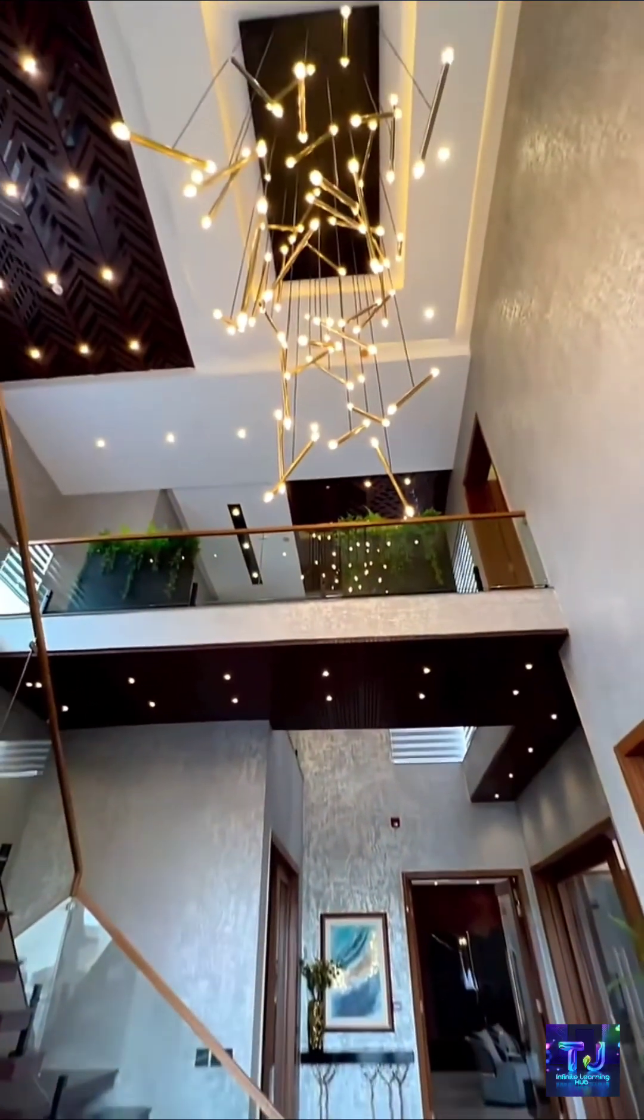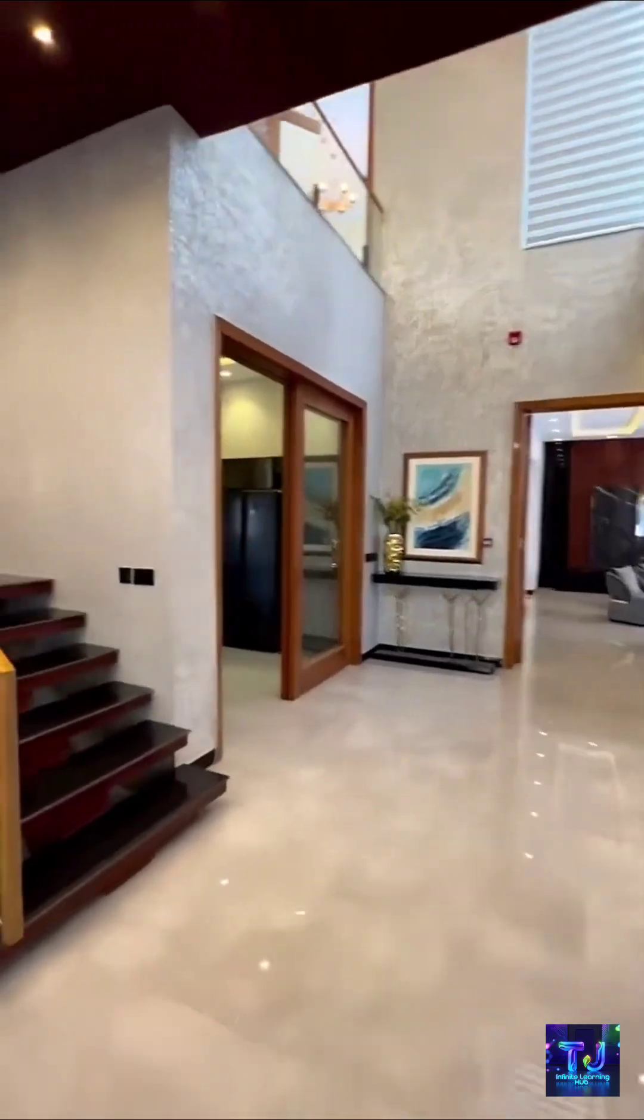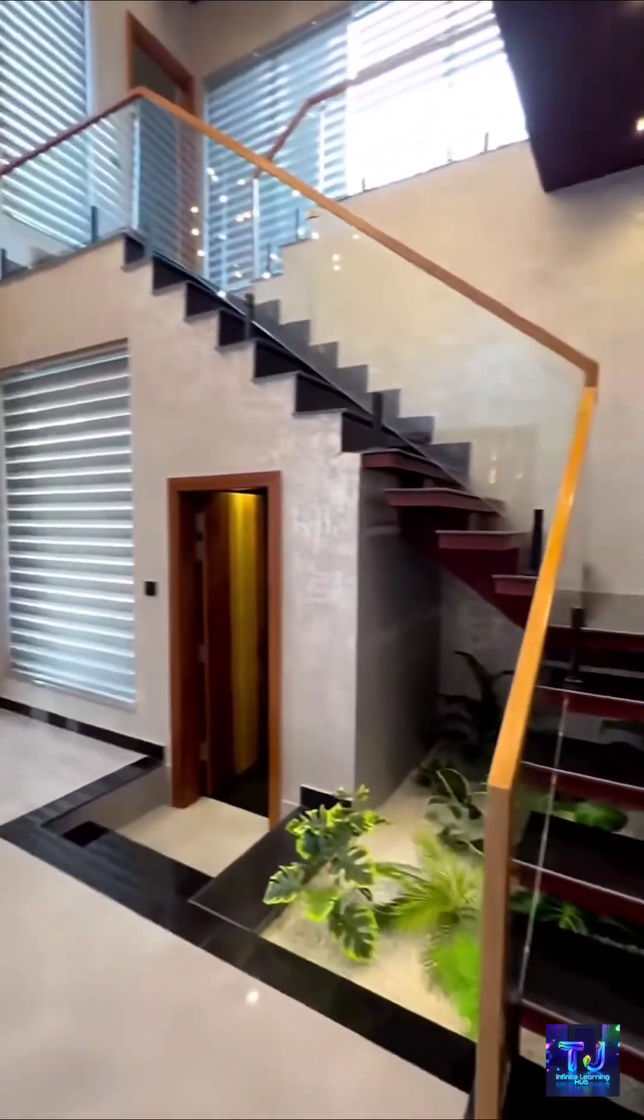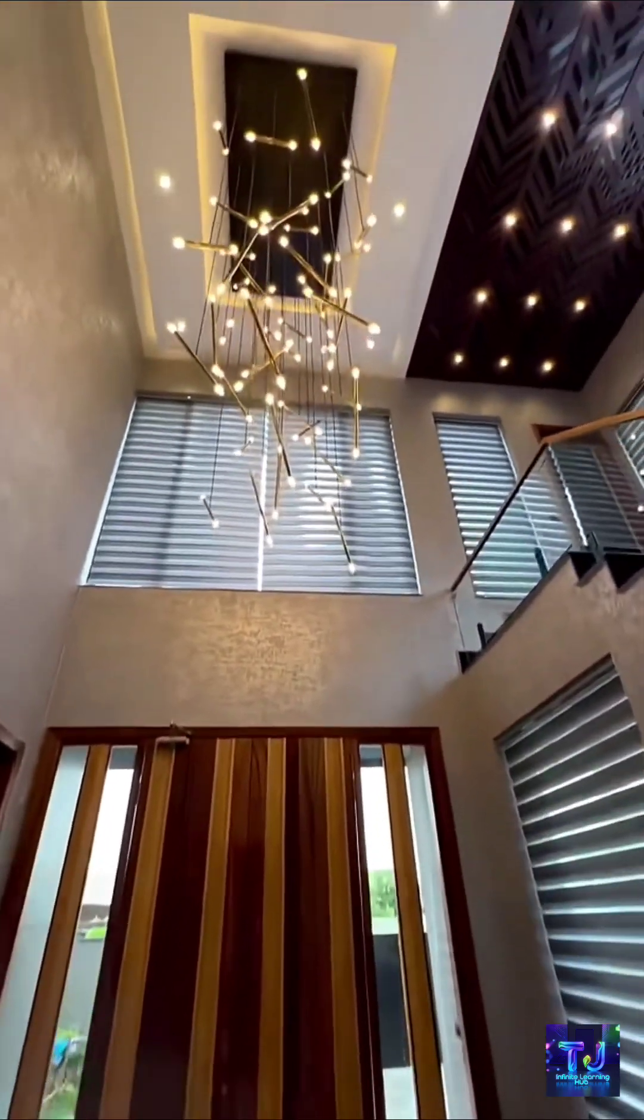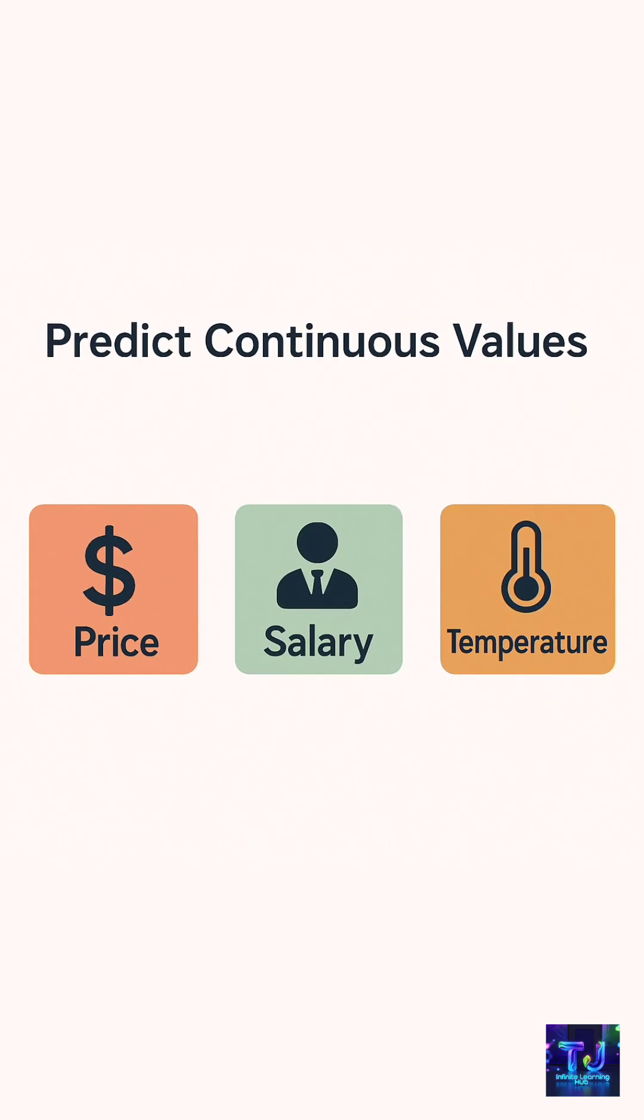Did you know how house prices are predicted? It's all powered by something called regression in machine learning. Today I will explain it to you in the simplest way possible. What is regression in machine learning? Regression is a supervised machine learning technique that helps us predict continuous values like price, salary, or temperature based on input data.